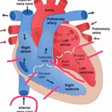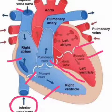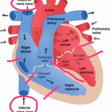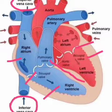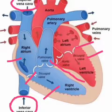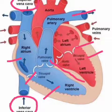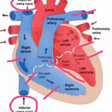Two large veins — the inferior vena cava and the superior vena cava — collect deoxygenated blood from different parts of the body to the right atrium. From the right ventricle, the pulmonary artery carries deoxygenated blood to the lungs for oxygenation.